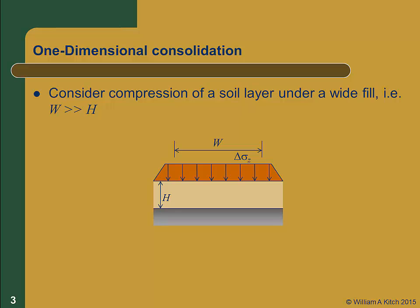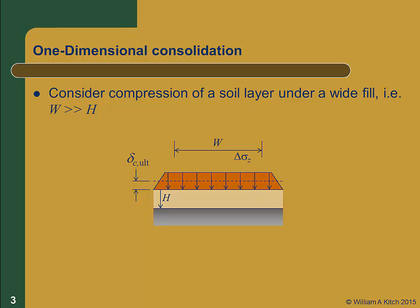When we place fill on a compressible soil layer, we're applying a change in vertical stress, delta sigma z. If the fill is wide compared to the soil thickness, then there's no stress distribution and the change in effective stress everywhere in the soil will be the same and equal to delta sigma z. In this case, the soil will consolidate, generating consolidation settlement delta c ultimate.